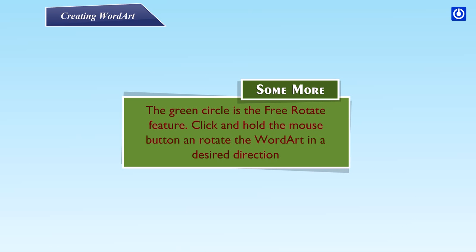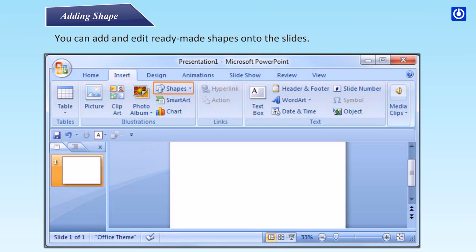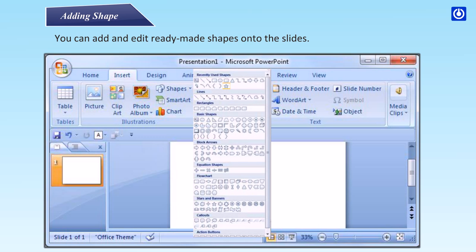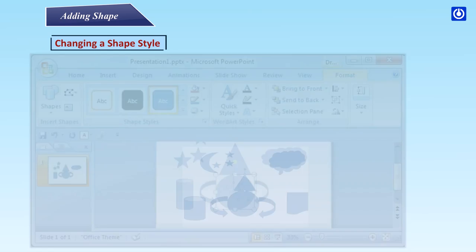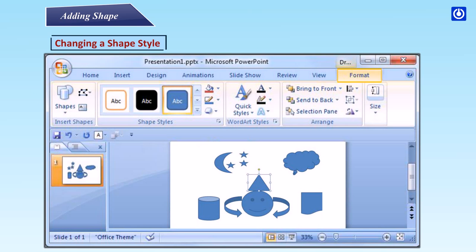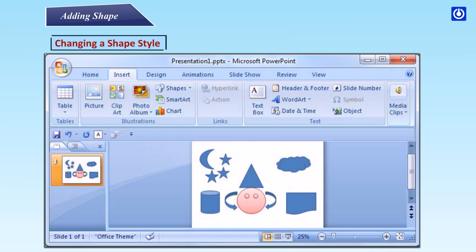The green circle is the free rotate feature. Click and hold the mouse button and rotate the Word Art in a desired direction. Adding shapes: you can add and edit ready-made shapes onto the slides. Step 1: In the insert tab, in the illustrations group, click Shapes. The shapes dialog box appears. Step 2: Select any shape. Step 3: Move your cursor toward the slide; it will appear as a cross shape. Step 4: Click and hold down the mouse button and drag the cursor until the shape is of the desired size. Changing a shape style: Step 1: Select the shape; the format tab will appear. Step 2: Click the More drop-down arrow in the shape style group to display more style options. Step 3: Move your cursor over a style to see a live preview on the slide. Step 4: Click a style to select one.